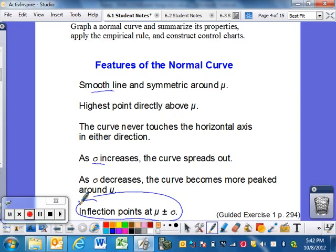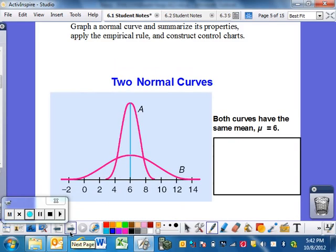Different things are nice. Guided exercise, we'll talk about this in class. If you open to page 294, guided exercise number one goes to four different things that will make something not a normal curve. So we'll kind of talk about that.